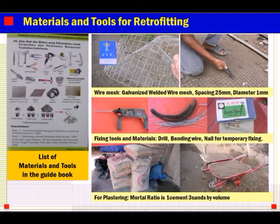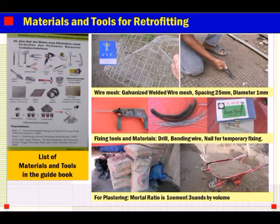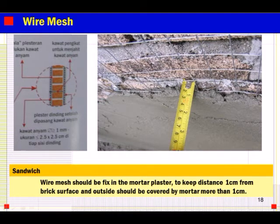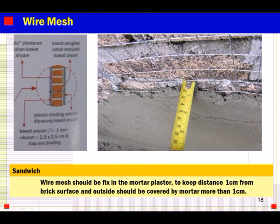The wire mesh is galvanized welded wire mesh — spacing 25mm, diameter 1mm. Fixing tools and materials include a drill, bending wire, and nails for temporary fixing. For plastering, the mortar ratio is 1 cement to 3 sand by volume. The wire mesh should be sandwiched by mortar plaster, fixed to keep a distance of 1cm from the brick surface, and the outside should be covered by mortar more than 1cm. This 1cm outside cover is important for durability.